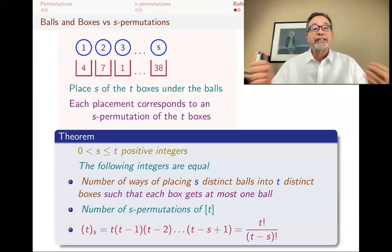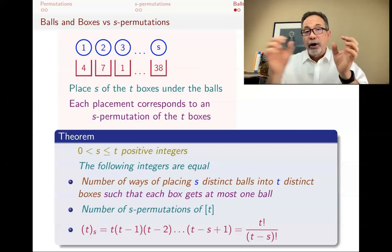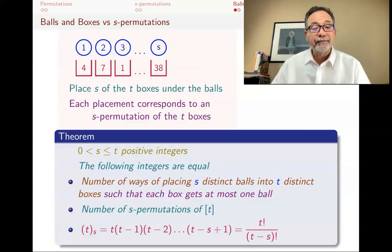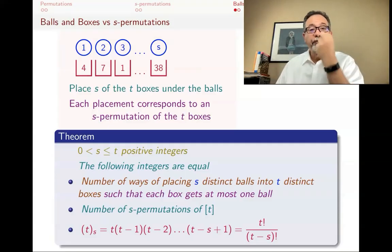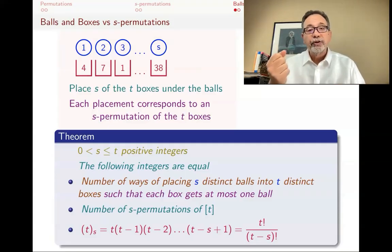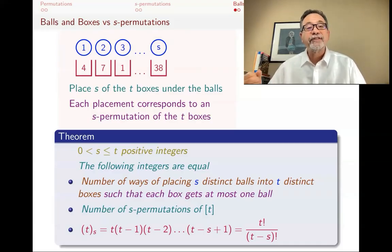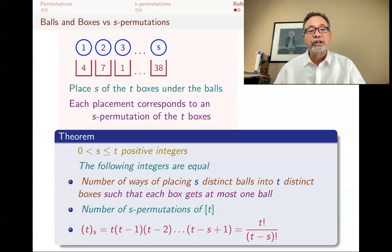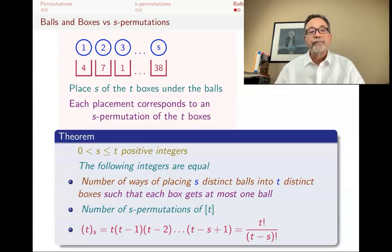If I want an s-permutation, I have s spots. For that first spot I have t choices, for the next one t minus one, for the one after that t minus two, and for the last one t minus s plus one. As we have seen, that's t factorial over t minus s factorial. So this theorem works.